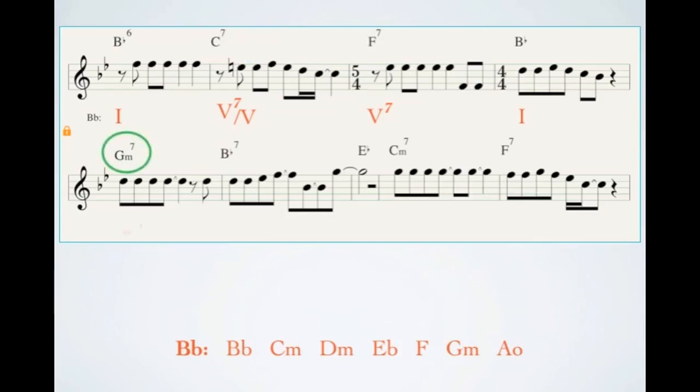Moving on, we see G minor 7, which is the VI7 chord, moving to a Bb dominant 7. Would this be a I7 chord? No. No. Remember, when the I chord in a major key is diatonically a major 7, not a dominant 7 chord. So a Bb7 in the key of Bb must be something else that is not diatonic.